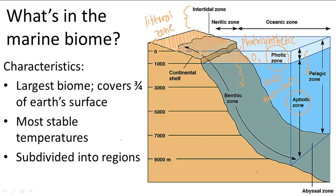Under the continental shelf is the pelagic zone, sometimes called open ocean. This encompasses the entire water column, and there is a very low nutrient concentration because this zone mainly consists of the aphotic zone. However, there are many different types of large aquatic animals, including fish, sea turtles, squids, dolphins, and other marine mammals.